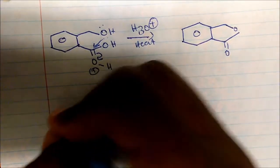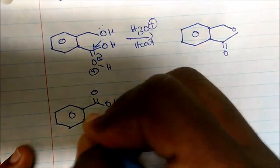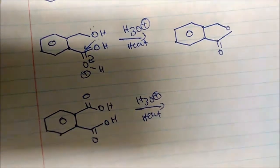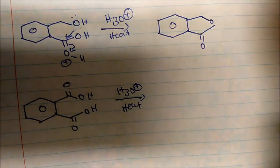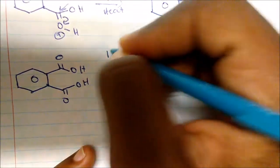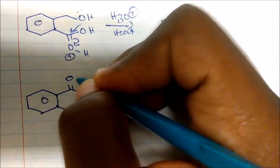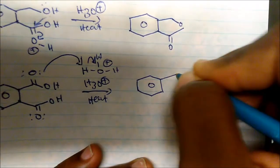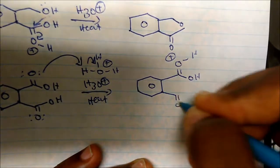Now let's take another molecule and add acid and heat. The first thing that happens is protonation of the carbonyl — acid donates a proton to the carbonyl oxygen, giving it a positive charge. Now we have the positively charged carbonyl oxygen, the other alcohol group, and the ketone, ready for the nucleophilic oxygen to attack.